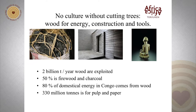2 billion tons are exploited from the forest every year; 50% of this exploited wood is for firewood. In the Democratic Republic of Congo, 80% of domestic energy comes from wood. Here in Tanzania it will be higher than that, because in Congo there is some hydropower. For countries like Kenya and Tanzania, it might be over 90% of domestic energy that comes from wood. We should not forget that the paper we use to make notes is also born in the forest — 330 million tons are cut for pulp and paper.